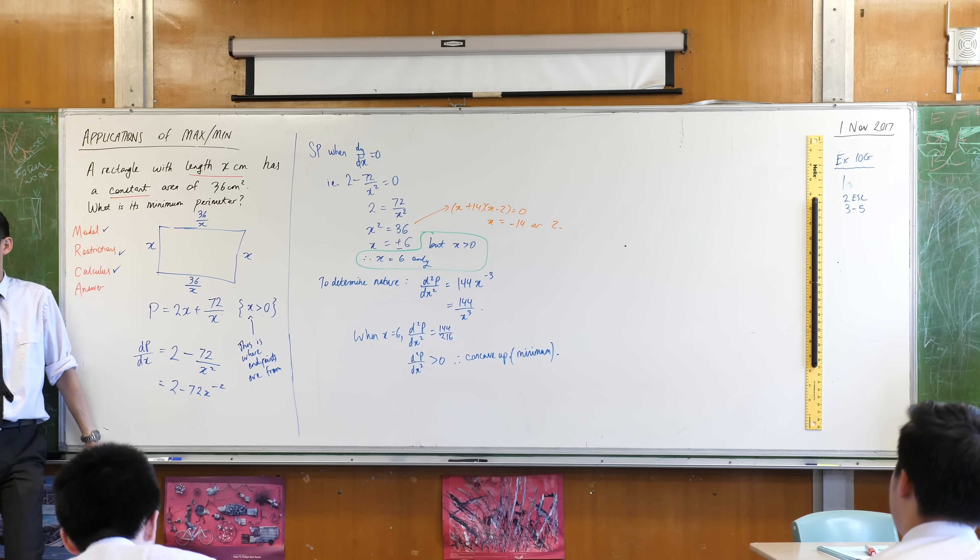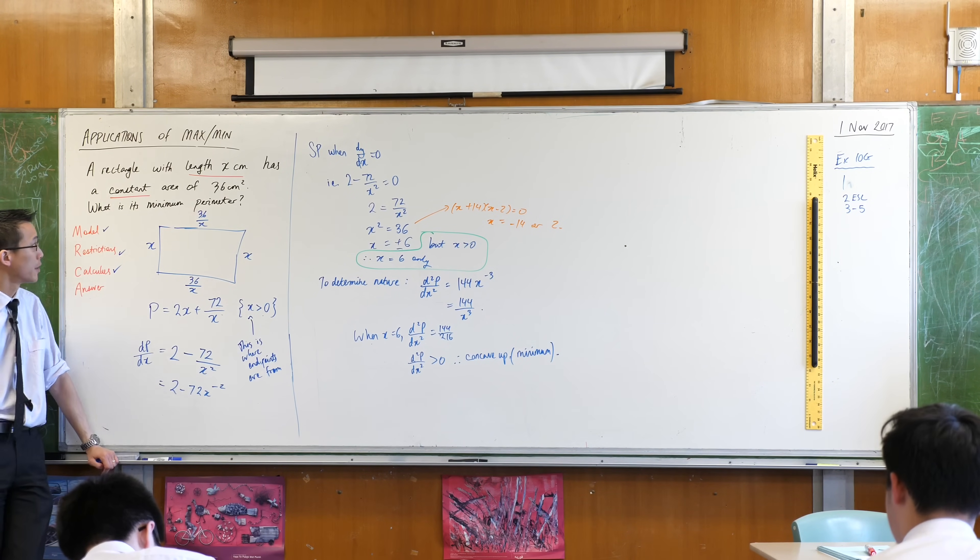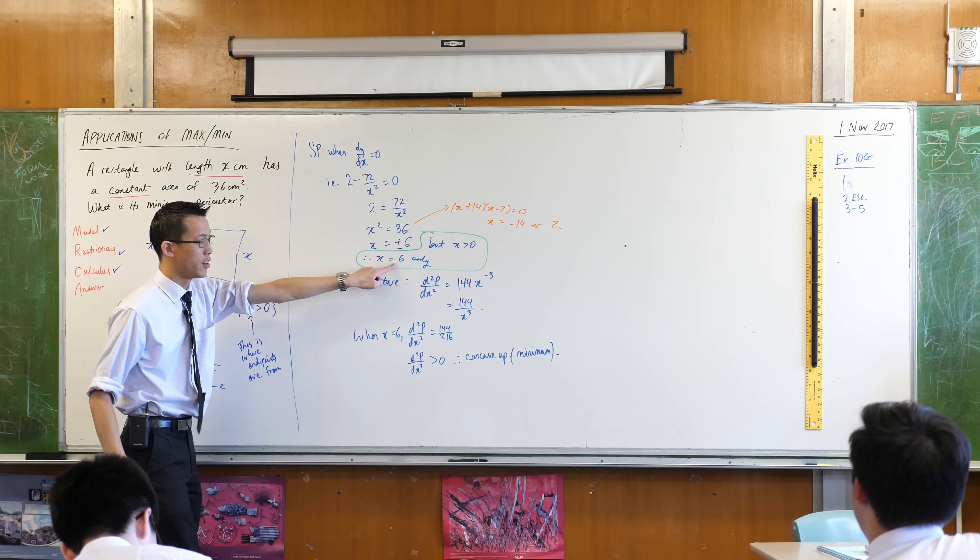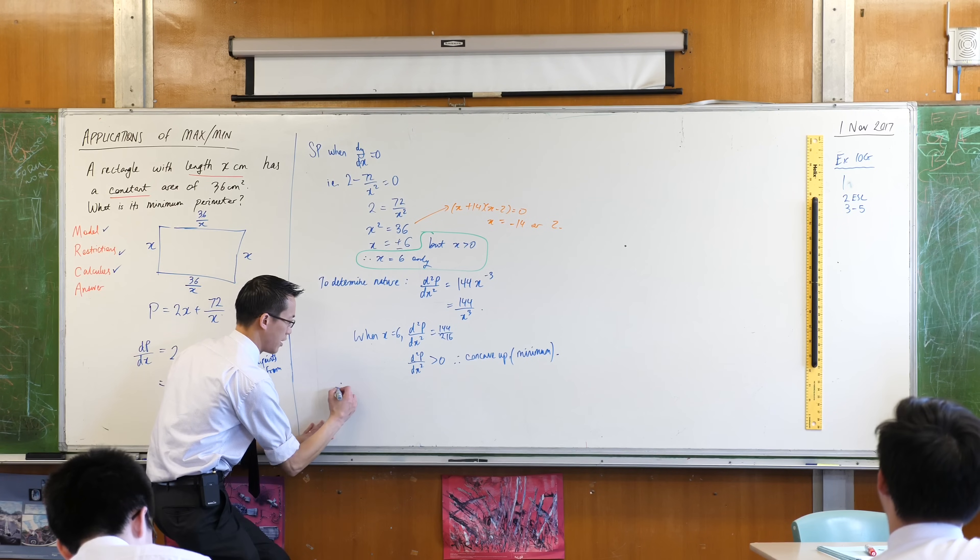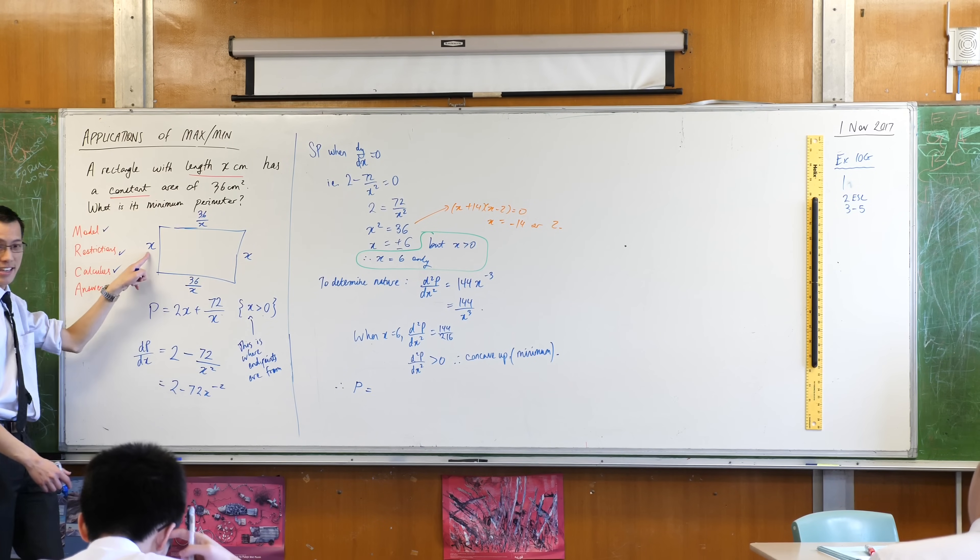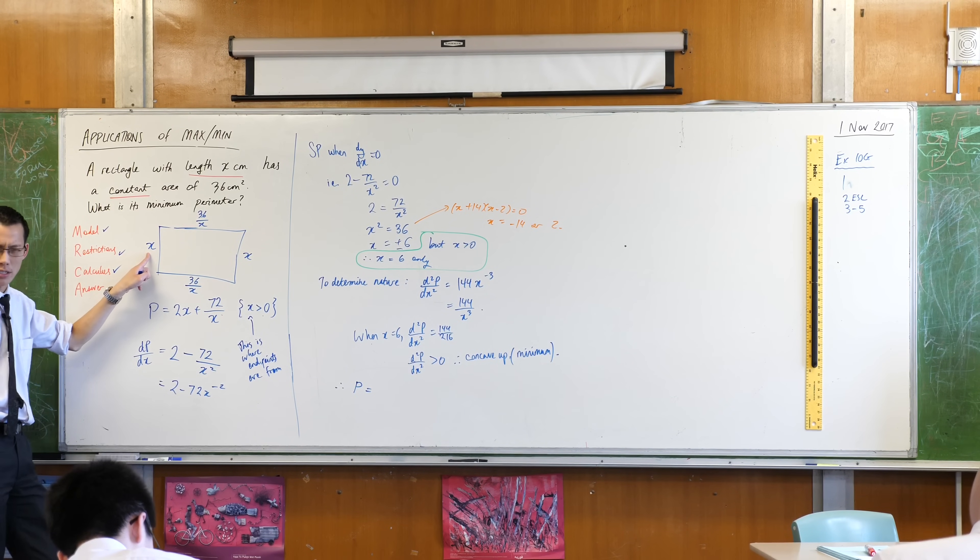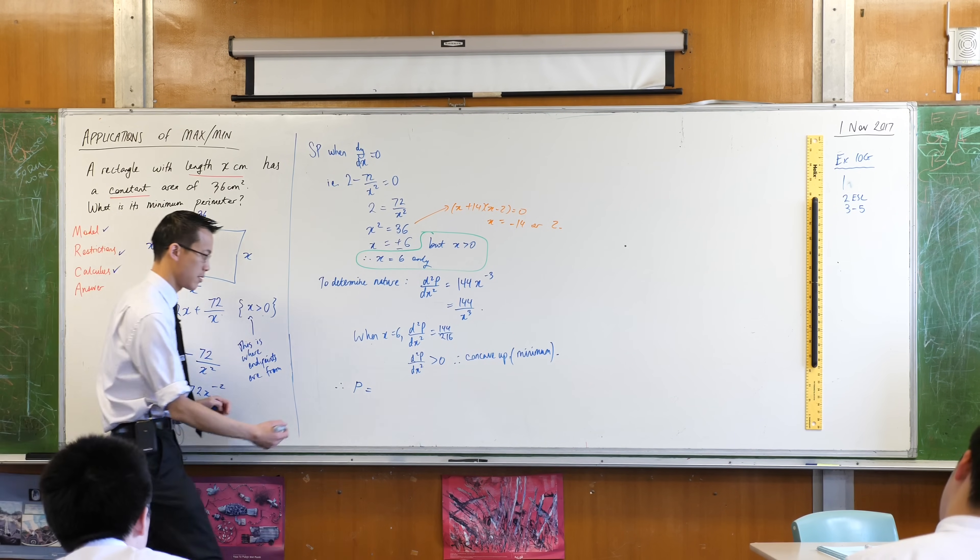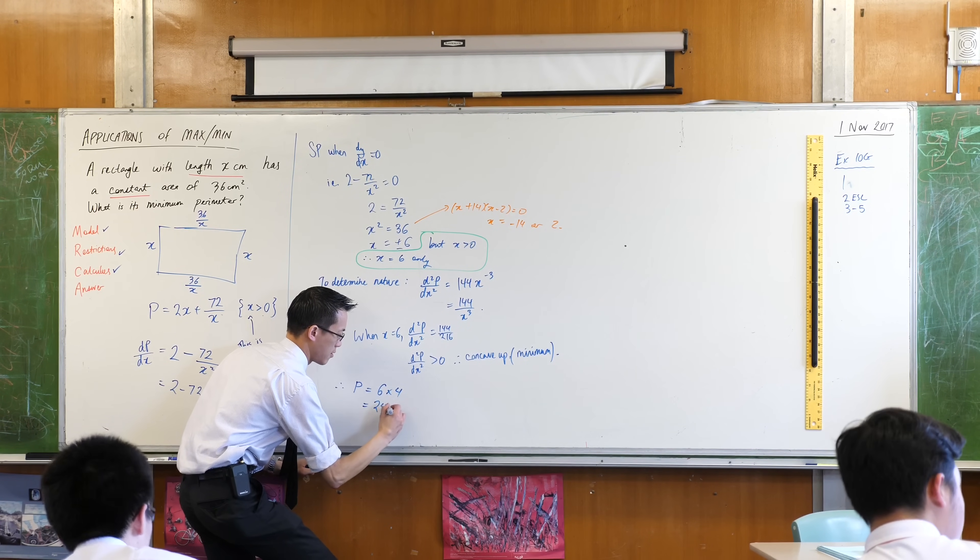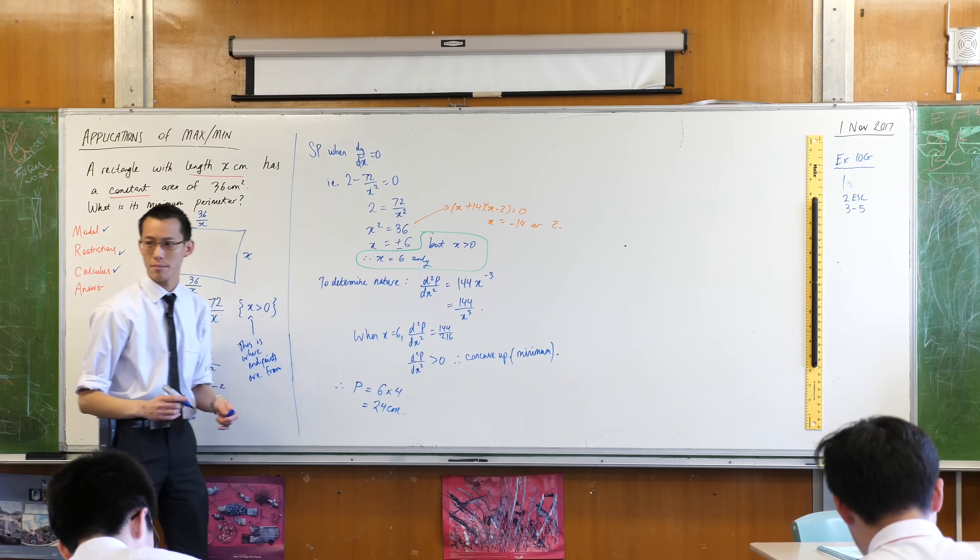What's the last thing? I actually got to find the perimeter. Like the question is about perimeter, not the dimensions. Thankfully, it's quite easy to work out. If this is 6 and this is 6, then what's the width going to be? Also 6. Are you happy with that?